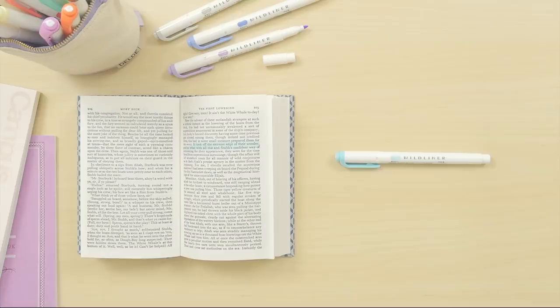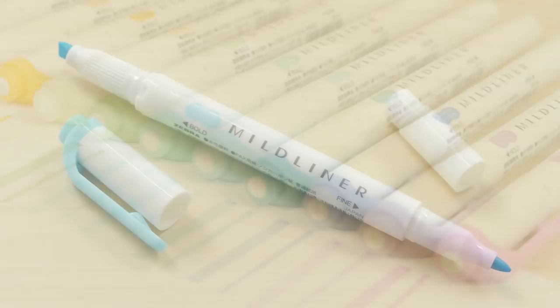The Zebra Mildliner Double-Sided Highlighters have soft ink colors that are easy on the eyes. They are double-sided with a broad and a fine tip so that you can highlight different sizes of text.